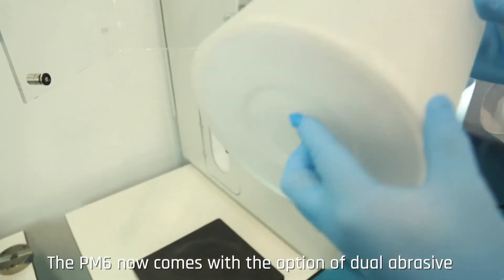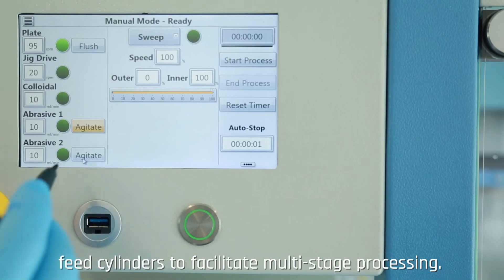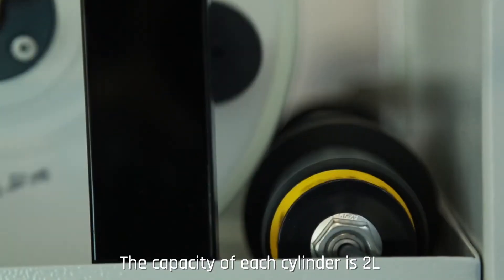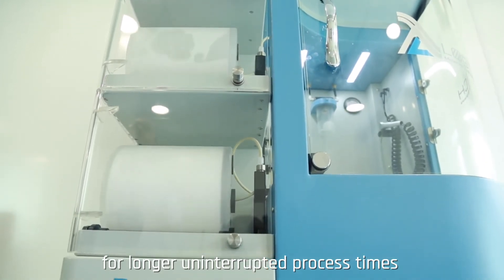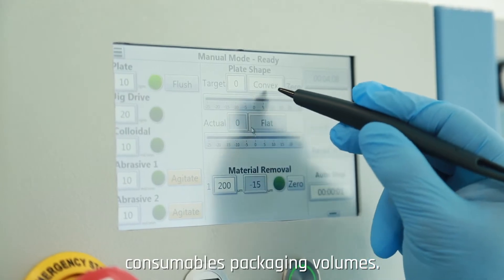The PM6 now comes with the option of dual abrasive feed cylinders to facilitate multi-stage processing. The capacity of each cylinder is 2 litres for longer uninterrupted process times and to conveniently coincide with consumables packaging volumes.